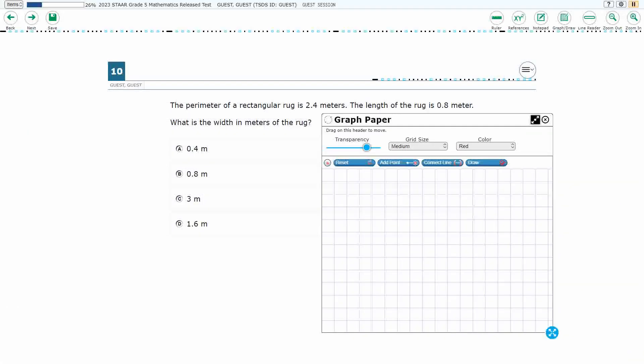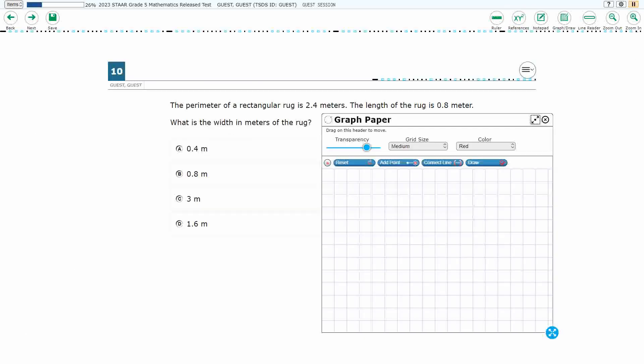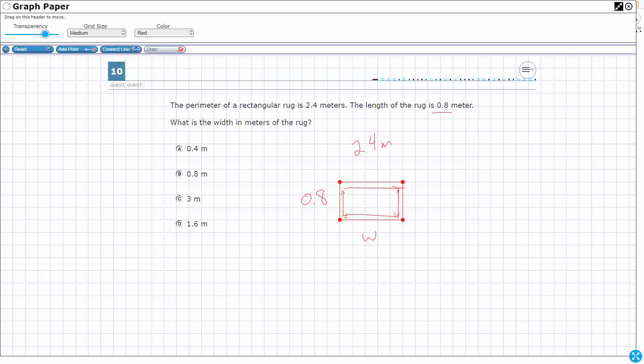So what do we know about the perimeter? Well, let's look at our reference material, and we see the perimeter of a rectangle is P equals 2L plus 2W. Okay, so let's write that. P equals 2L plus 2W.